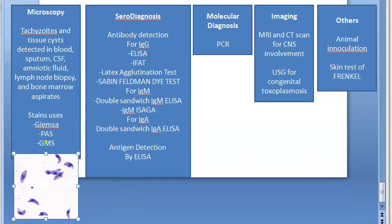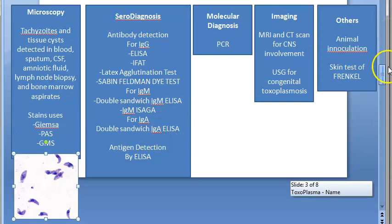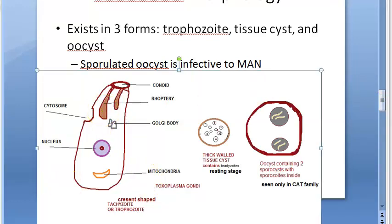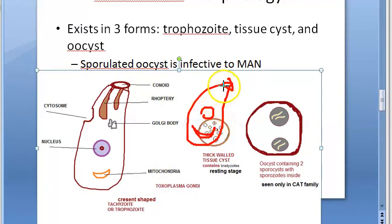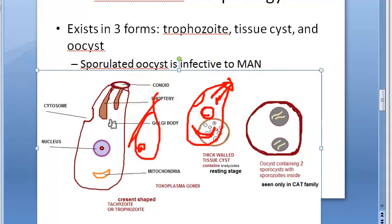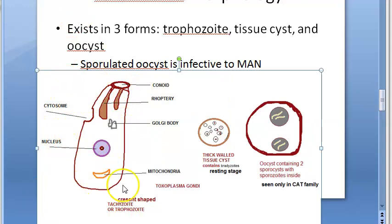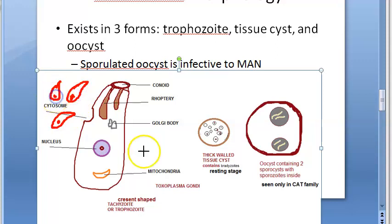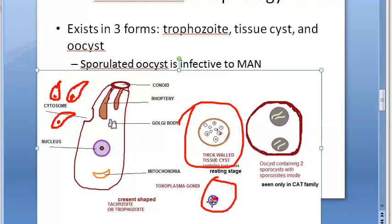A good thing to do in lab diagnosis questions is to draw the diagram of the tachyzoite. Draw one crescent shape with a nucleus, mitochondria, rhoptries, cytosome, and Golgi body. At minimum, a comma-shaped organism with a dot will earn some microscopy marks. For tissue cysts, draw one circle with smaller circles inside it — that is the thick-walled tissue cyst. Only these two forms are detected in microscopy.